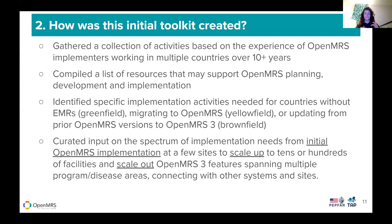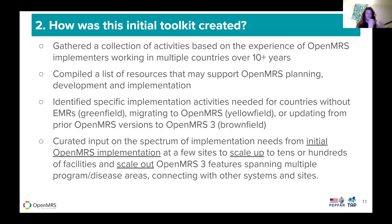We call those 'green field' — you can picture a big green field where there are no electronic health records, where you're going to go and implement one. You might be migrating to OpenMRS, which we called 'yellow field' — switching from one electronic health record to another. Or perhaps you're updating from a prior version of OpenMRS to OpenMRS 3, which we call a 'brown field' implementation. We use these color codes to help distinguish which activities might be more important for someone just starting with an EMR versus those that are more seasoned and transitioning.